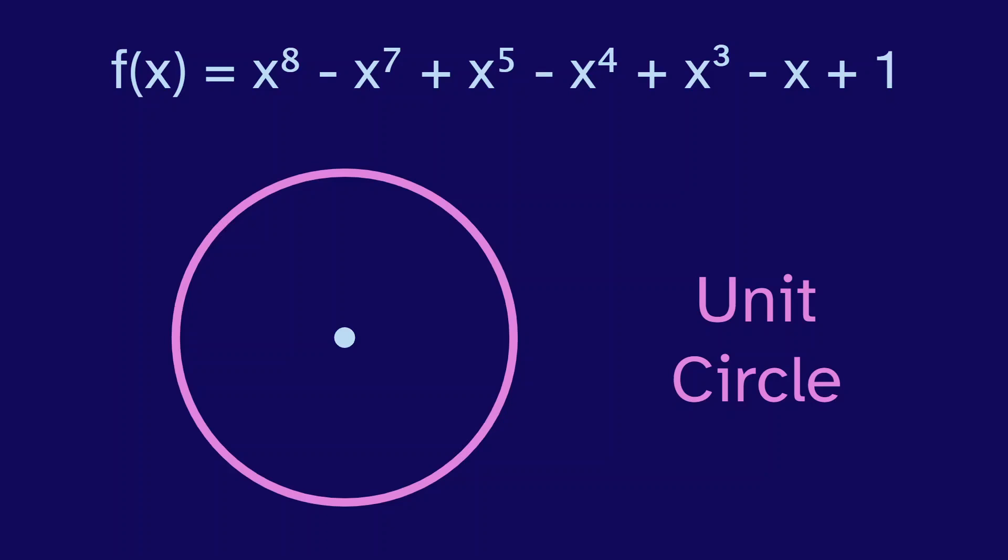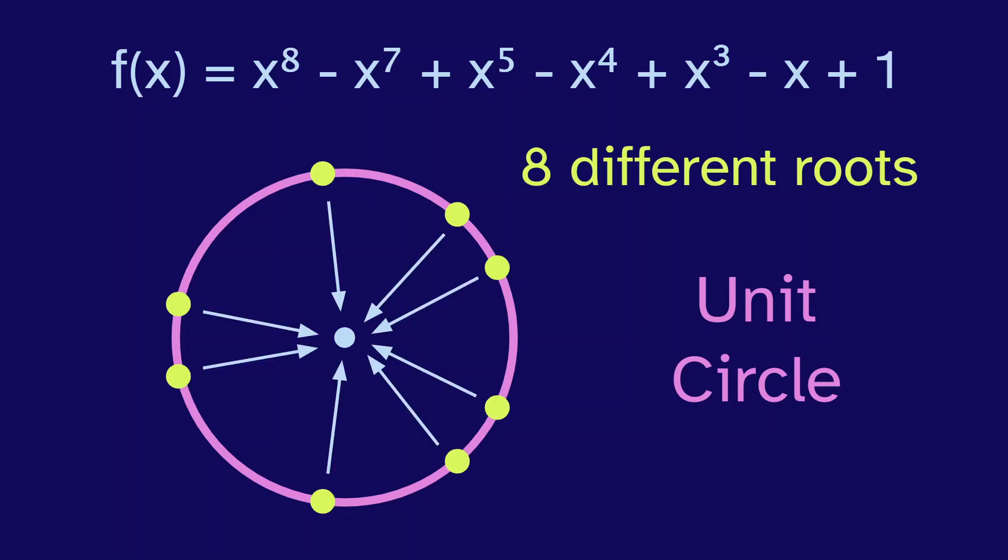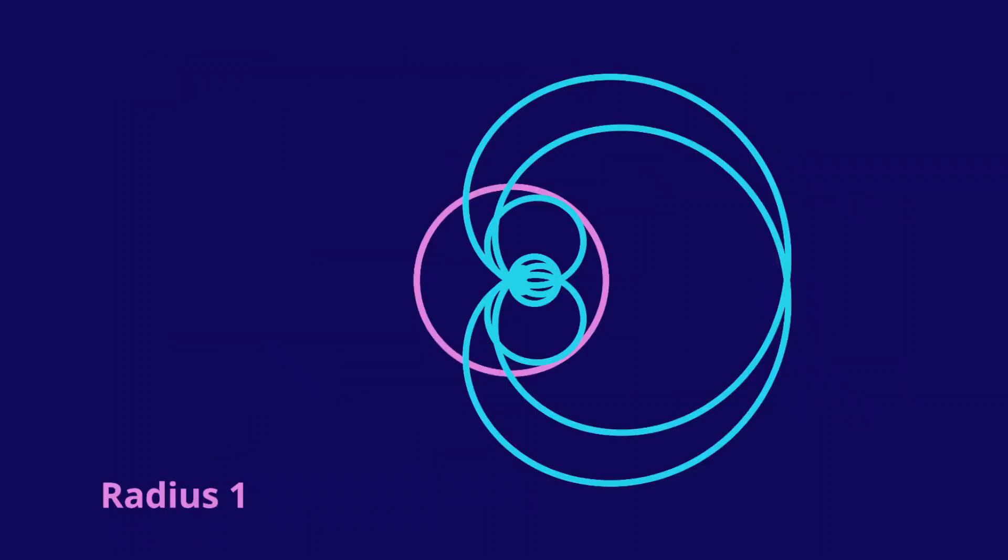And this polynomial is special because it has 8 different roots all on the unit circle. Roots are inputs that give 0 as an output. So our output graph must pass through 0 8 different times, once for each root. But remember, it's a closed loop. So it has to curve a lot to get each root to 0, giving us this cool shape.